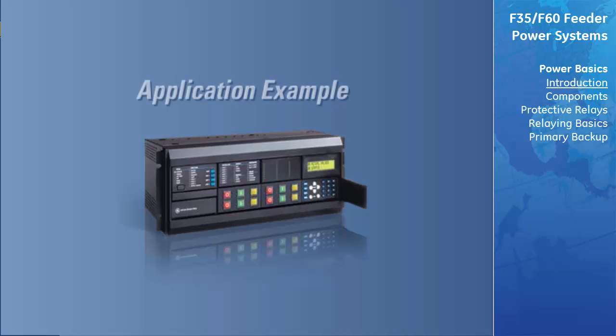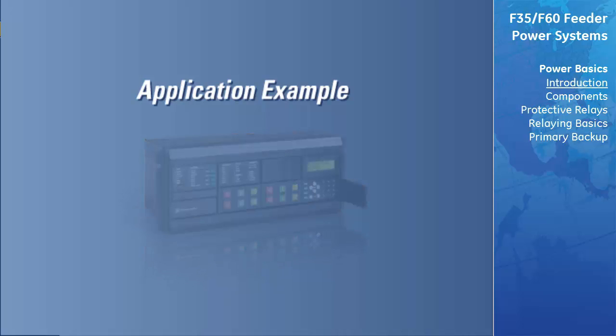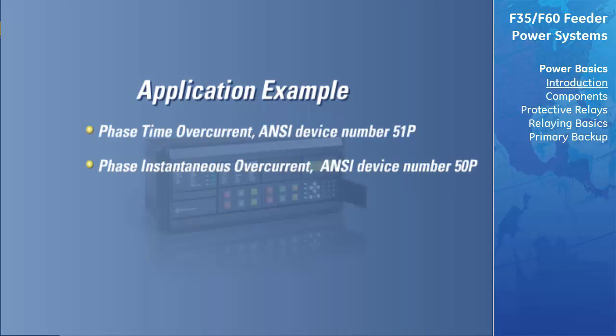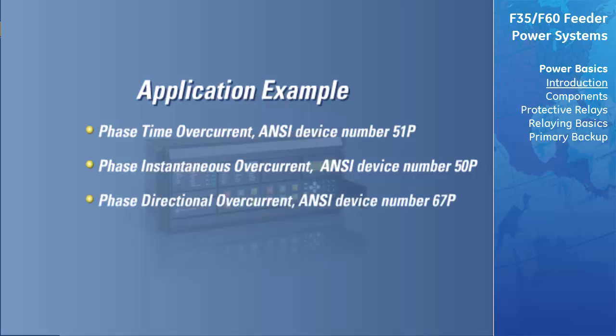The third section, which is the focus of this course, is the application of F-35 and F-60 feeder management relays, including settings calculations for the following protective elements: Phase time overcurrent, ANSI device number 51P; phase instantaneous overcurrent, ANSI device number 50P; and phase directional overcurrent, ANSI device number 67P.